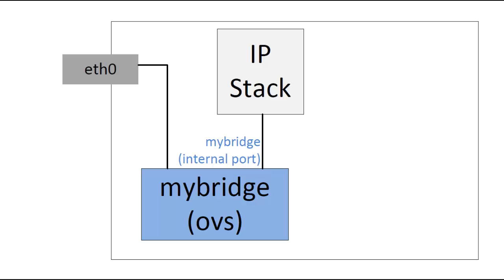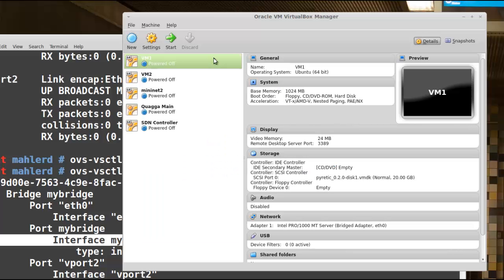Back to our diagram — my-bridge now has two new ports, vport1 and vport2. Next I'll connect a couple of VMs to these new ports on OVS. On my laptop I'm using VirtualBox for virtual machines — you can download VirtualBox from virtualbox.org. OVS supports other virtualization platforms too, like KVM and Xen, but I'm using VirtualBox here. The VMs I want to use are VM1 and VM2, both Ubuntu images.